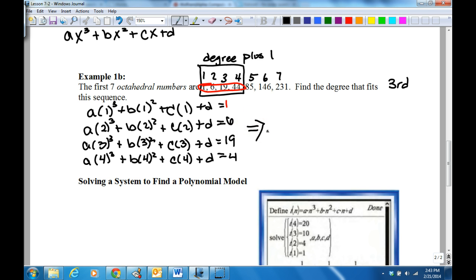Now I'm just going to simplify it. So what's one to the third? This is one, right? And then we're going to make a matrix and create a matrix. Okay, so that's the first one. Notice how I just simplified it. 1a plus 1b plus 1c plus 1d equals 1.